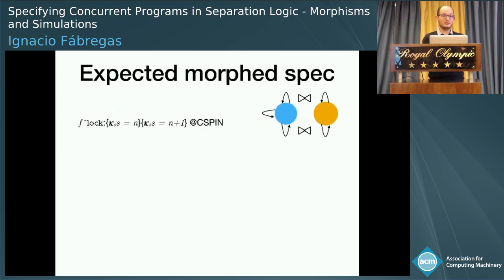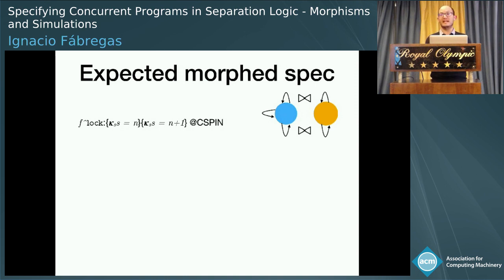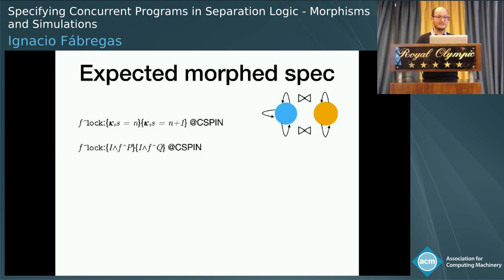For example, an unlock transition will be mapped to locking and the identity transition, because we are not going to change the counter if we unlock. The expected specification is: if we start with counter at n, after locking we reach n plus one. Let me show how we can derive that specification using our inference rule.